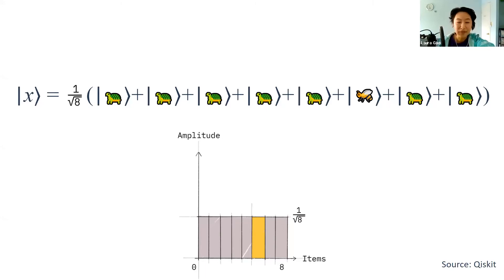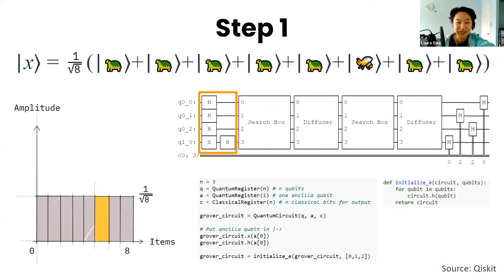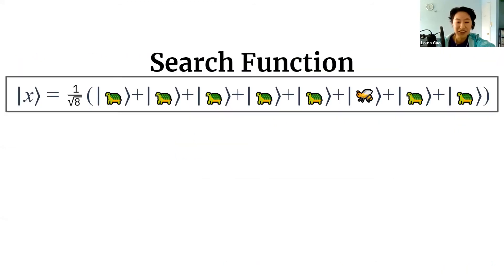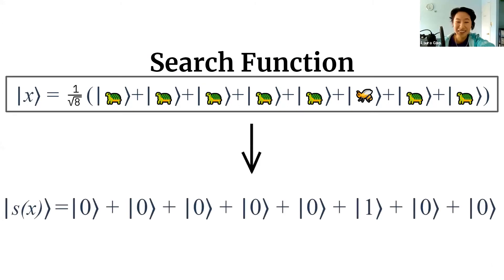We can put a quantum object into a wave where it's kind of at the location of each of these H emojis. This will be the first step of our quantum circuit. Once we apply the search function once to our wave, it gets applied simultaneously to each of our components, so each of the emojis.